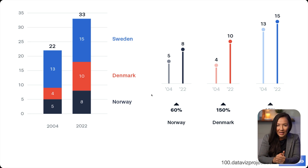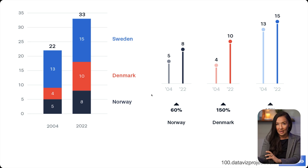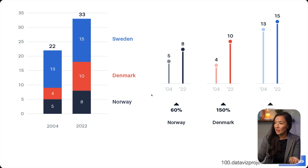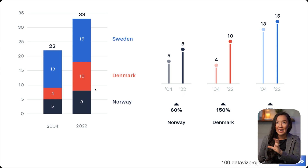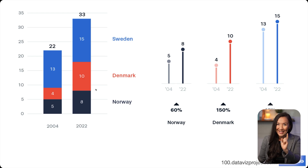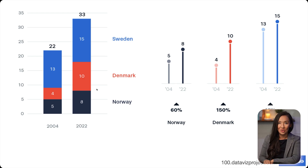So what is an encoding? An encoding is the way that we take raw data and map it onto a visual variable, like color, position, size, etc. So when you have visualizations like this, they might be a very similar chart type, but they can use different encoding channels. Let's break down the encoding channels in these two visualizations.